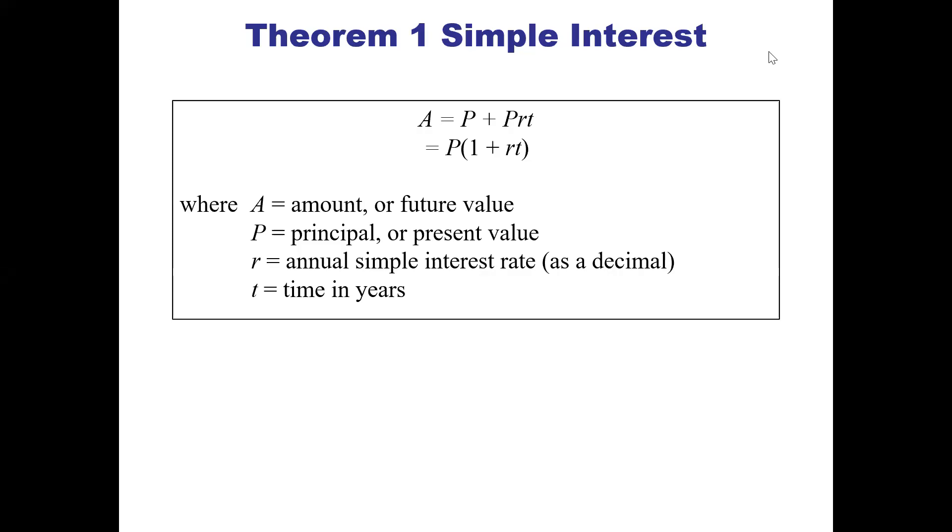Here we have Theorem 1 on simple interest. A equals the principal plus the principal times the rate times the time. We're taking some principal and adding the interest (Prt) together, and that's going to be our future amount in the account.